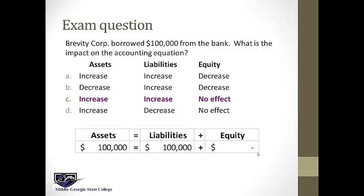If you borrow from the bank, you now have cash but you also have a liability. So assets went up and liabilities went up, and there was no effect on equity. As time goes on, by the end of next year you might have interest on the debt, which would further impact your accounting equation. But on the day you borrow, the only difference is you have cash and a new liability.